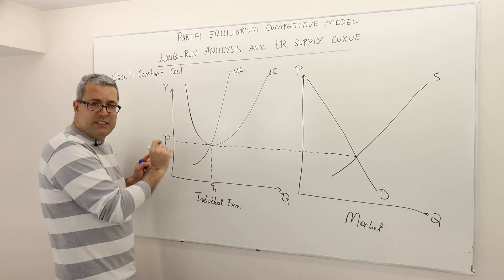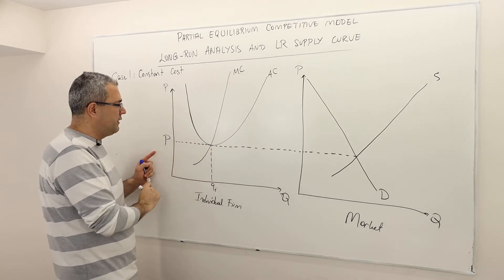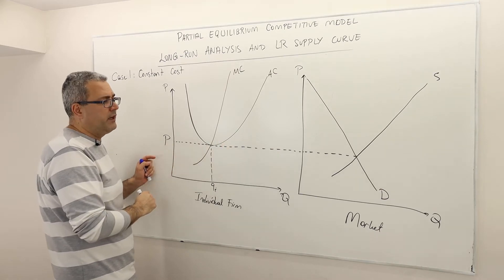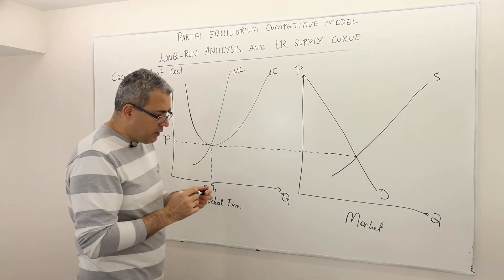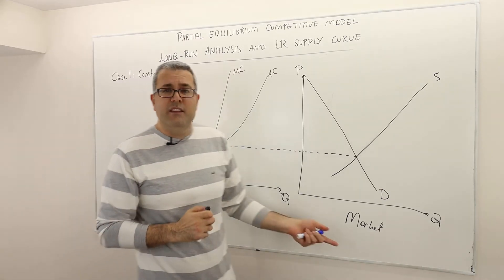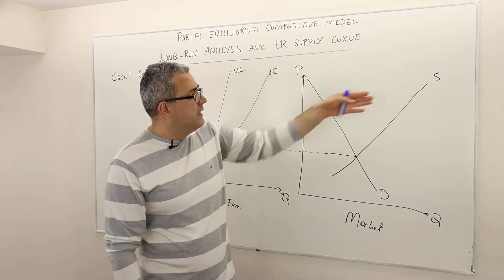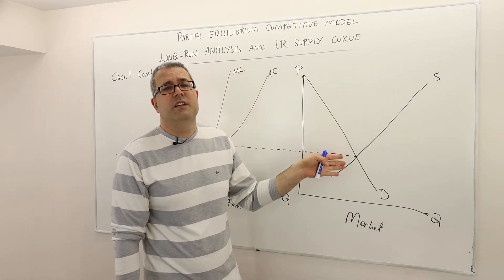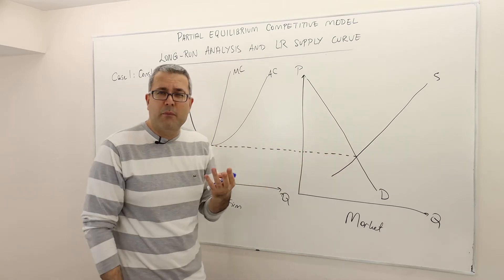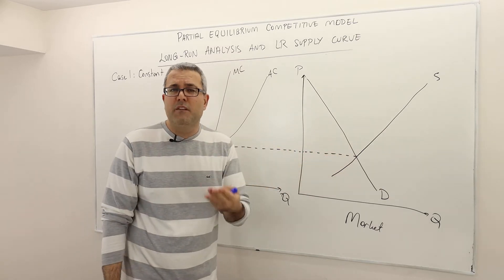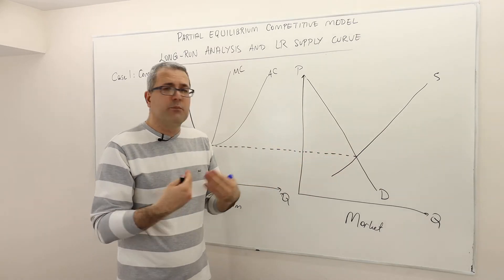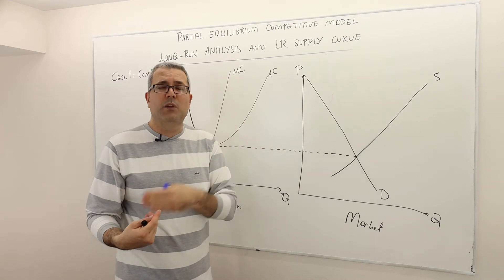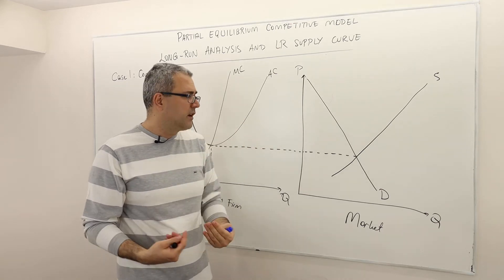This is the zero-profit condition and the long-run competitive equilibrium price. Also, in this market, we must have enough supply where demand and supply intersect at that price. The competitive equilibrium price is the price where quantity supplied and quantity demanded are equal.